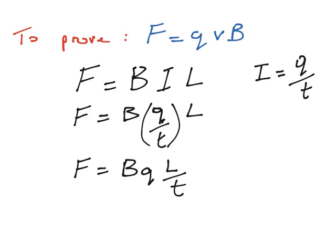And we should remember that distance or length divided by time is just velocity. So velocity is length or the distance covered by the charge in a certain length of time measured in seconds. So what we then have is the force is equal to the magnetic flux density B, multiplied by the charge, multiplied by the velocity of the charges.